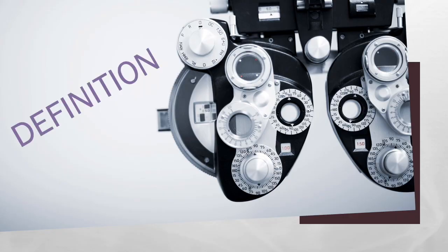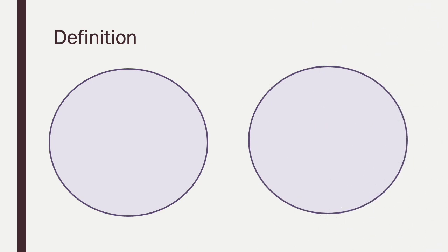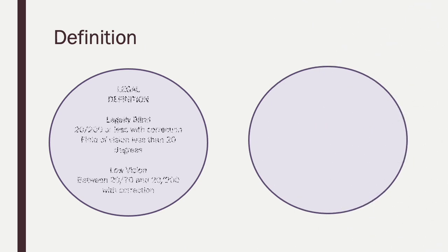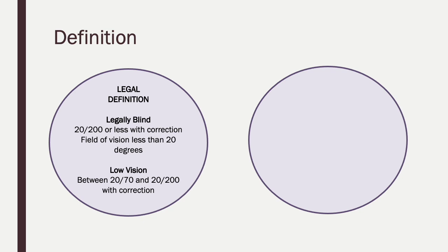Let's start with the definition. There are two definitions. We have the legal definition. For legally blind, a person sees at 20/200 or less with correction, meaning with glasses or eye surgery. And their field of vision is less than 20 degrees. For low vision, a person sees between 20/70 and 20/200 with correction.